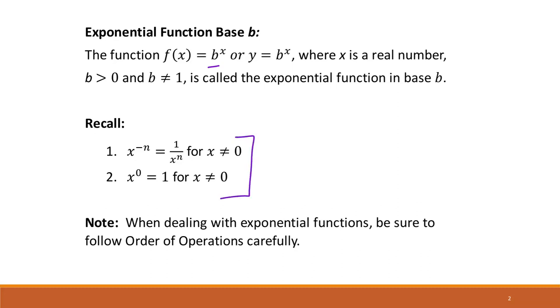If x is to the negative n, so it has a negative exponent, that means 1 is over x to the n. So it's basically like reciprocal rule.